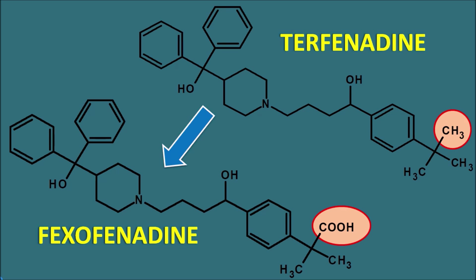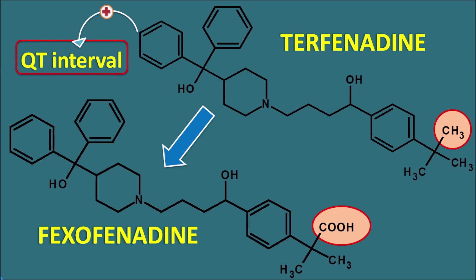Terfenadine is a drug which can increase the QT interval on the ECG, producing a fatal cardiac arrhythmia called torsades de pointes. That is why terfenadine was withdrawn from the market. Fexofenadine is still available because it does not produce a significant increase in the QT interval and therefore does not cause torsades de pointes. However, fexofenadine should still be used carefully in patients who are at risk of increased QT intervals.